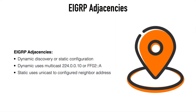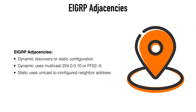An adjacency is a relationship formed with a neighboring EIGRP router. EIGRP can discover neighboring routers dynamically or through static configuration. Dynamic discovery is the default method initiated when EIGRP is enabled on an interface. With dynamic discovery, EIGRP sends hello packets out to a multicast address in an attempt to discover neighboring EIGRP devices and form an adjacency. Static configuration requires that we manually designate a network address, and then EIGRP sends hello packets out using a unicast neighbor address.